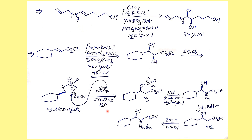After forming the diol using DHQD, treatment with SO₂Cl₂ protects both hydroxyl groups as a cyclic sulfate — since both groups are trans, the cyclic sulfate forms with trans geometry. This is then treated with sodium azide, which exclusively attacks on one specific side: the reason is that the negative charge generated will be stabilized by the electron-withdrawing ester group (CO₂Et). The product is then treated with HCl to remove the cyclic sulfate, followed by hydrogenation conditions to remove the azide, and finally protected as Boc. This entire synthetic sequence is very important.